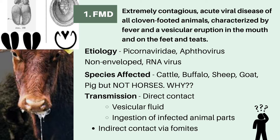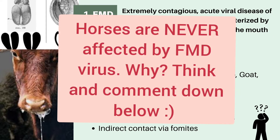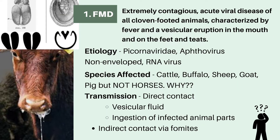Coming next to its etiology, FMD is caused by a virus from the Picornaviridae family named Aphthovirus. This virus is a non-enveloped RNA virus. The species that FMD affects are mainly cattle, buffalo, sheep, goat, pig, etc. But horses are never susceptible to FMD virus. Think about why that is and let me know down in the comments below.